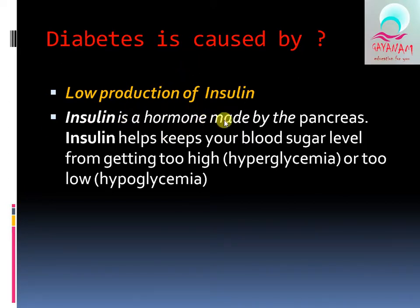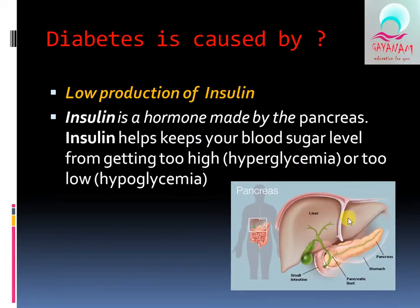We can maintain the sugar level and maintain the insulin hormone. We can see the image of the liver, the small intestine, and the pancreas. The pancreas produces the insulin hormone.